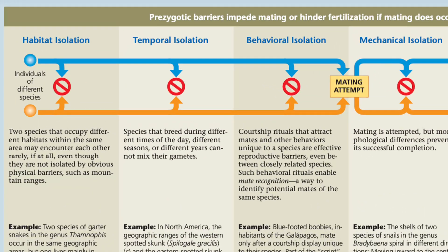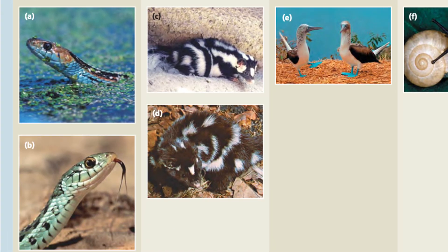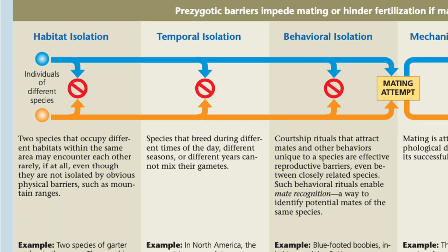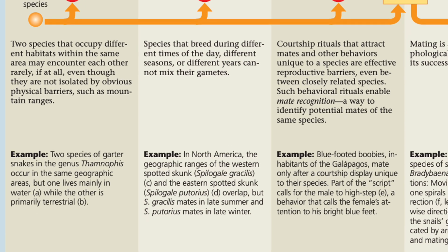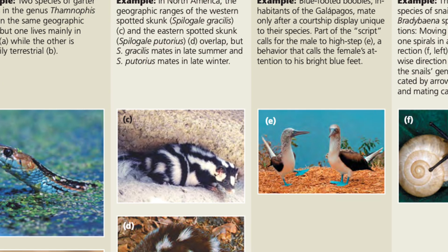Let's take a look at the prezygotic barriers first. The first one is habitat isolation, which channels the idea of allopatric speciation. With populations that live in completely different habitats — for instance, an aquatic snake species and a terrestrial one — it's pretty clear they wouldn't be found at the same place at the same time to mate. The second is temporal isolation, where two species or populations have different times at which they breed, such as birds and their mating seasons, or skunks that either mate in summer or winter — it would inhibit interbreeding because they wouldn't be doing it at the same time.